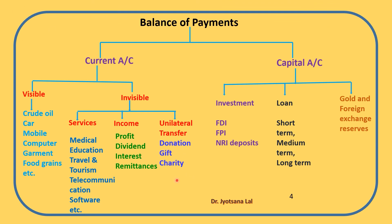Under the capital account, the main items are investment — FDI (foreign direct investment) done in our country or our country investing in others — and FPI (foreign portfolio investment), including investment in shares, debentures, and bonds. NRI deposits in our country are also an important part of the capital account. Various types of loans — short term, medium term, or long term — borrowed from or given to other countries, including loans from international financial institutions such as IMF or World Bank, are also recorded in the capital account. Finally, gold and foreign exchange reserves are also maintained in the capital account. This covers the whole components of Balance of Payments.